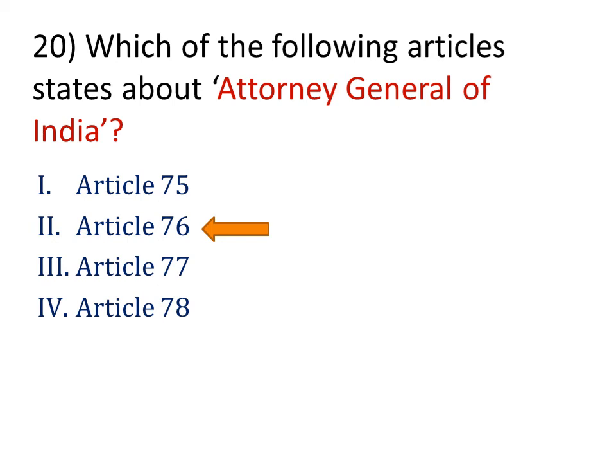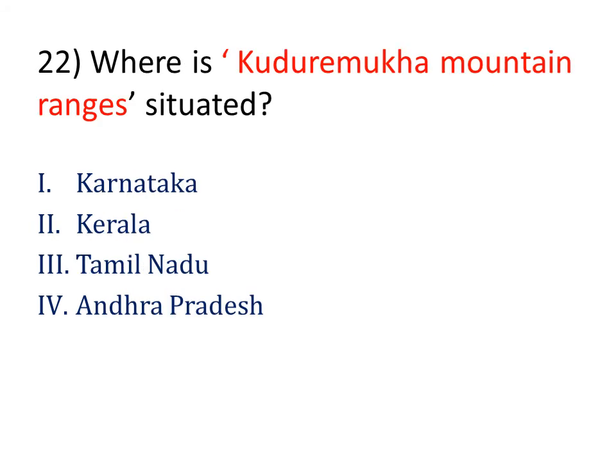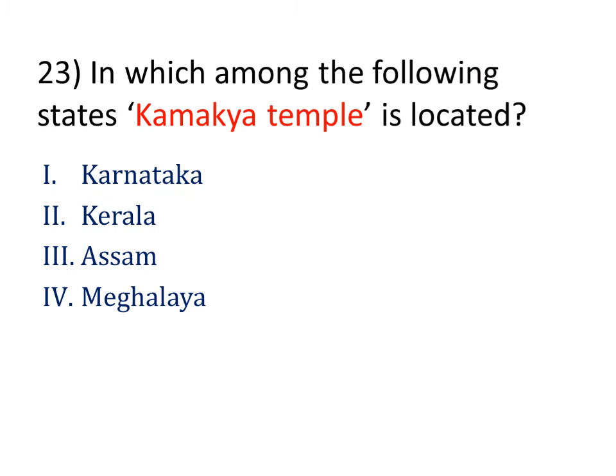Where is the Kudremukh mountain range situated? Our answer is Karnataka. Kudremukh is a mountain range and the name of a peak located in Chikmagalur district in Karnataka.